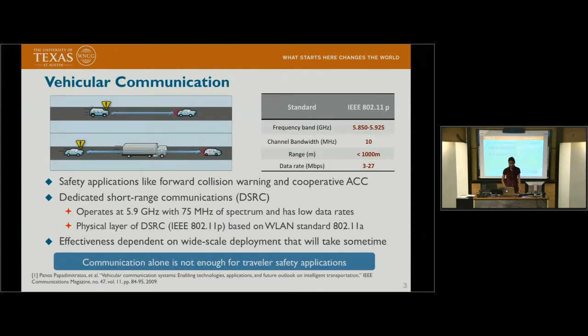Then let's go to the vehicular communication systems, which are based on standards like DSRC, which operates at 5.9 Gigahertz with 75 MHz of band. They can also be applied for applications like forward collision warning and cooperative automatic cruise control. However, the standard has low data rate because of the low bandwidth. We can use millimeter wave communication for high data rate. However, it's yet not adopted.